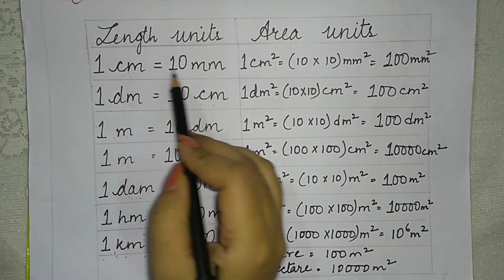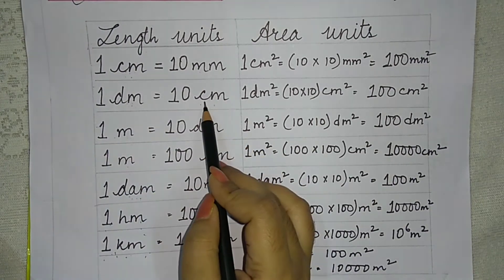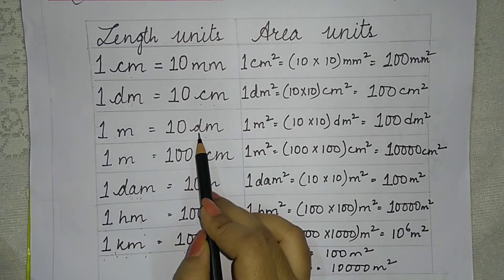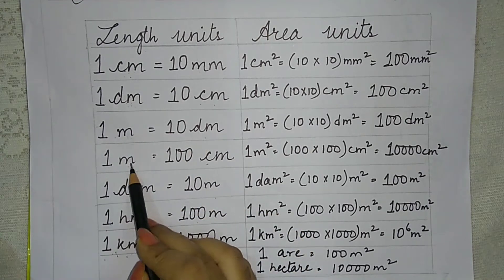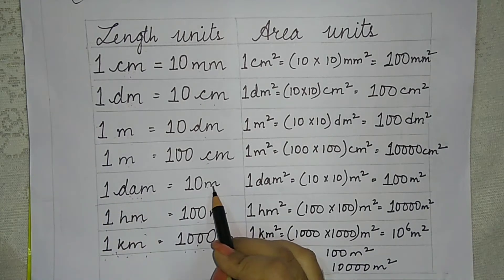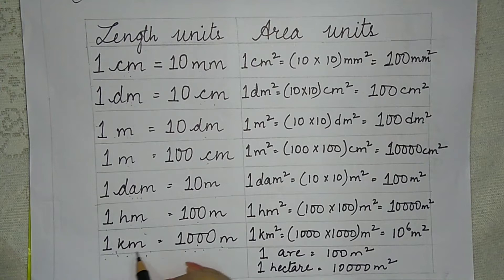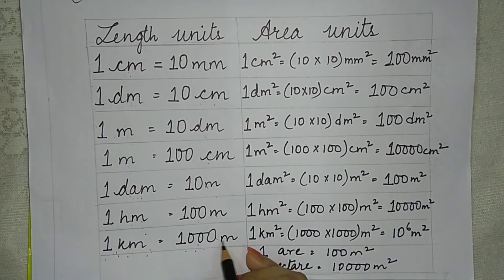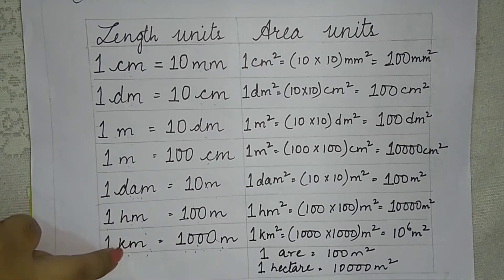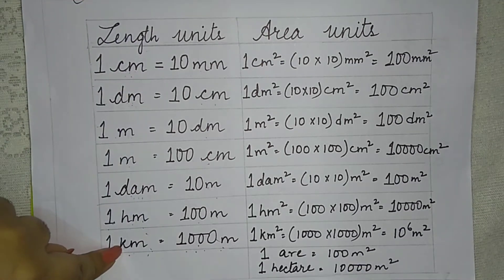One centimeter is equal to 10 millimeters. One decimeter is equal to 10 centimeters. One meter is equal to 10 decimeters. One meter is equal to 100 centimeters. One decameter is equal to 10 meters. One hectometer is equal to 100 meters. One kilometer is equal to 1000 meters. This is from smaller units to greater units.